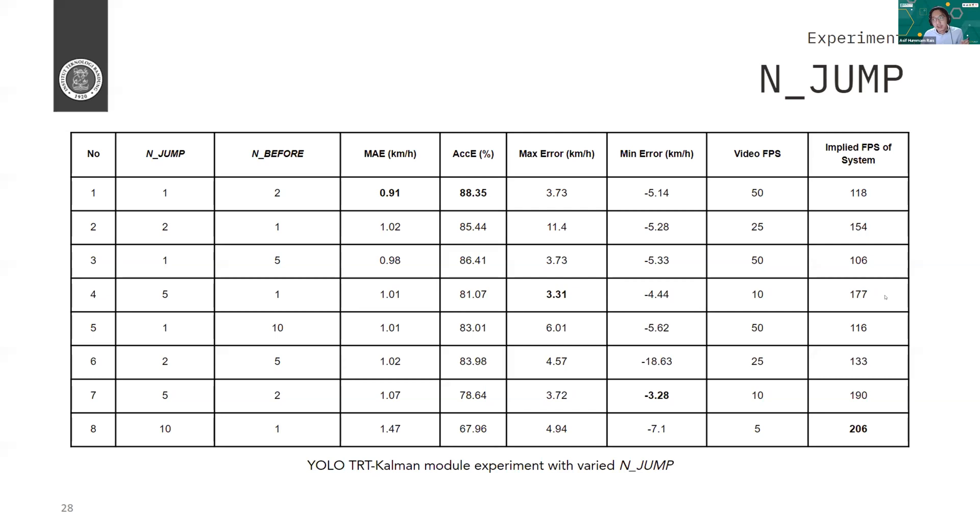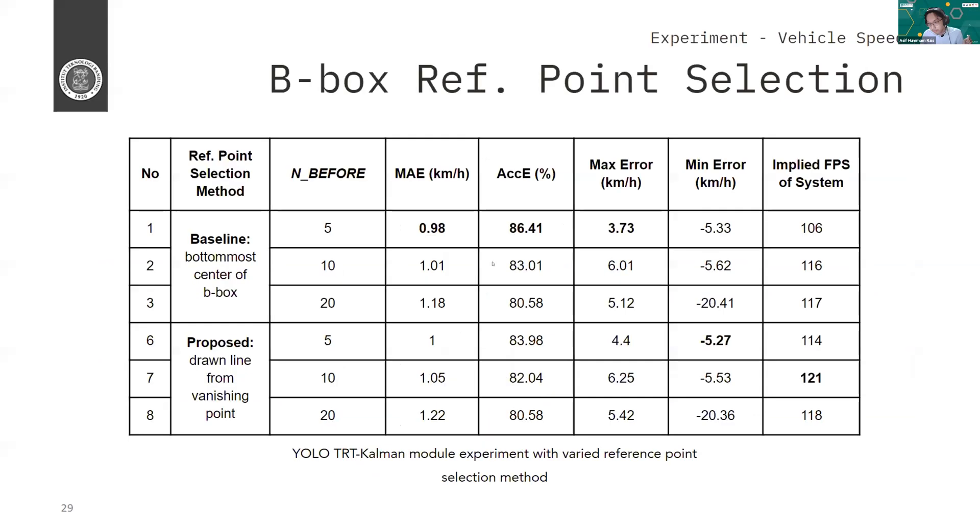And then for the bounding box reference point selection. Yeah, actually for this one, the baseline produced a better result rather than the proposed one. So, or rather I should say that it's not very much in difference. So basically if you use the bottom center of the bounding box, then it has 0.98 MAE. And then if you use the proposed one, it has 1.0. So only little difference. But almost every row here, you can see it makes the MAE worse. So we will skip this one. We will make this proposed one, we will dump the proposed one.